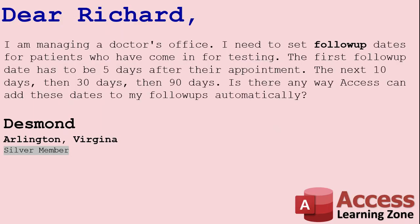Today we have a double question. Part one comes from Desmond in Arlington, Virginia, a silver member. Desmond says: I'm managing a doctor's office. I need to set follow-up dates for patients who have come in for testing. The first follow-up date has to be five days after their appointment, the next 10 days, then 30 days, then 90 days. Is there any way that Access can add these dates to my follow-ups automatically? Yes, there certainly is.